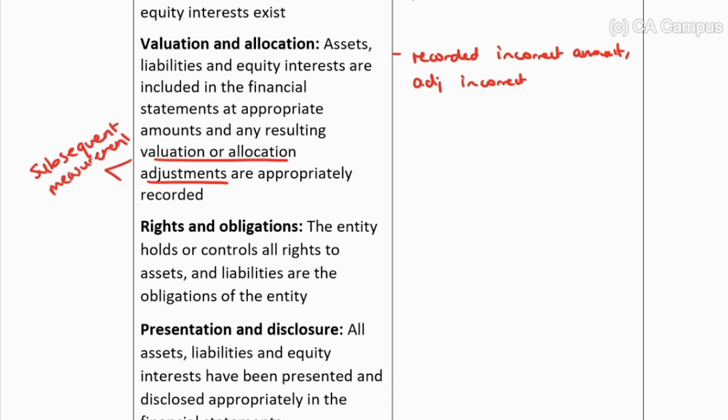We can see that the valuation assertion is dealing with those remeasurements and subsequent measurements, because it talks about resulting adjustments being recorded. An allowance for credit losses, depreciation, or impairment — those are not transactions; they form part of the valuation of a balance.